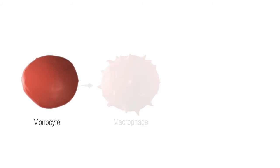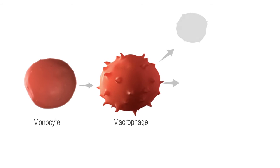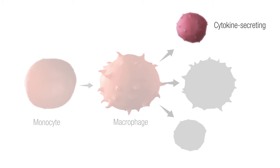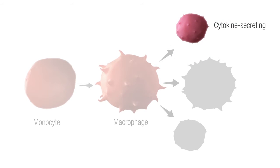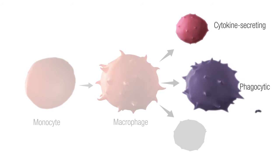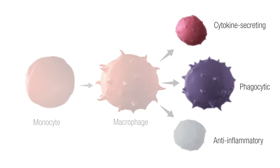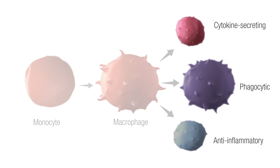Once inside the tissue, local environmental cues drive these cells to further differentiate into functionally distinct populations. Some will differentiate into macrophages that secrete pro-inflammatory cytokines for host defense. Others engage in phagocytosis of cellular debris for tissue repair. Lastly, there are macrophages that produce anti-inflammatory cytokines to regulate the immune response.